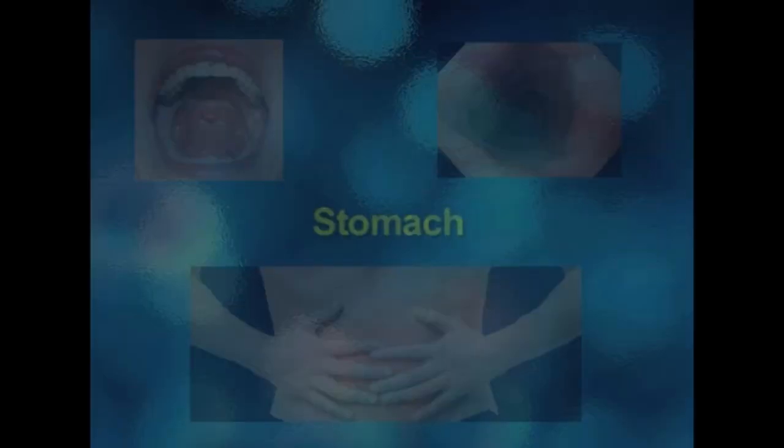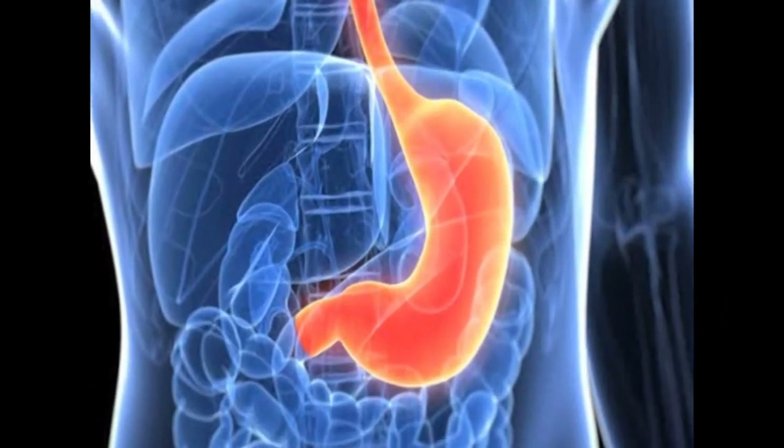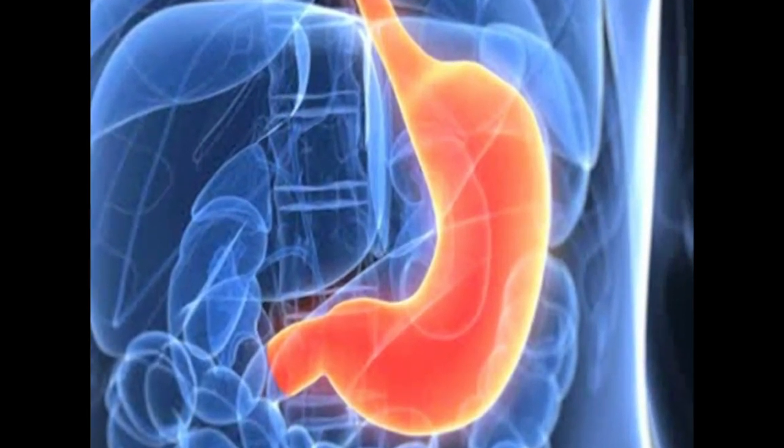Do not smoke or use smokeless tobacco. If a person has GERD symptoms at night, raise the head of the bed six to eight inches. Now we will see about the stomach. The stomach is the muscular, hollow, dilated part of the digestive system, functioning as an important organ of the digestive tract in many animals including vertebrates, echinoderms, insects, and mollusks. It is involved in the second phase of digestion following mastication, also known as chewing. In most vertebrates, the stomach is located between the esophagus and the small intestine. It secretes protein-digesting enzymes called proteases and gastric acid to aid in food digestion.